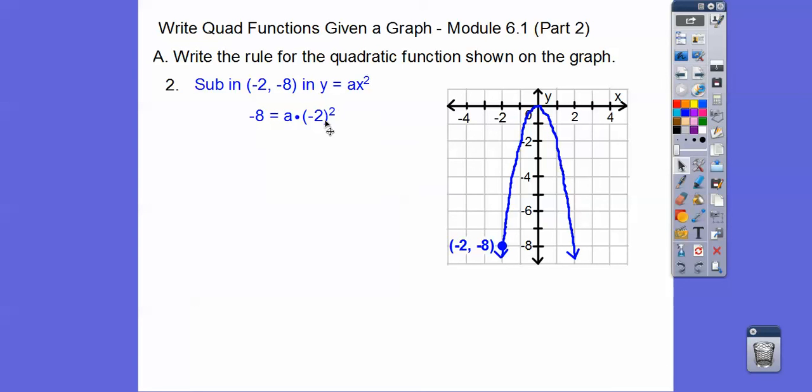-2² is 4. So we get -8 = 4a. Then we divide both sides by 4. -8 divided by 4 is -2. So our equation is g(x) = -2x². Easy.